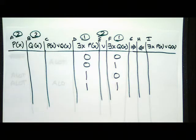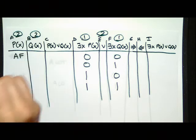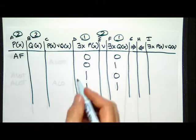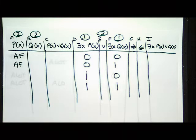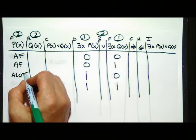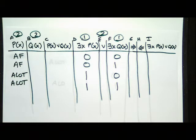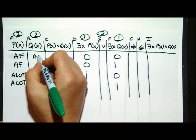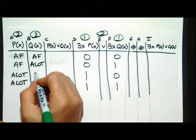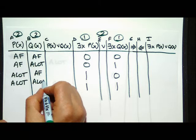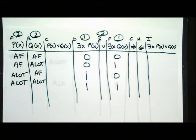Let's go row by row. If 'there exists X, P of X' is false, then P of X is always false — because if it was ever true, the existential would be true. We use AF for 'always false'. In the third and fourth rows, 'there exists X, P of X' is true, so we have at least one true. We do the same for 'there exists X, Q of X'. This AF/ALOT shorthand was made up by Dr. Bitzer and me so we can build truth tables for predicate calculus without writing all X values — you may not see it anywhere else.